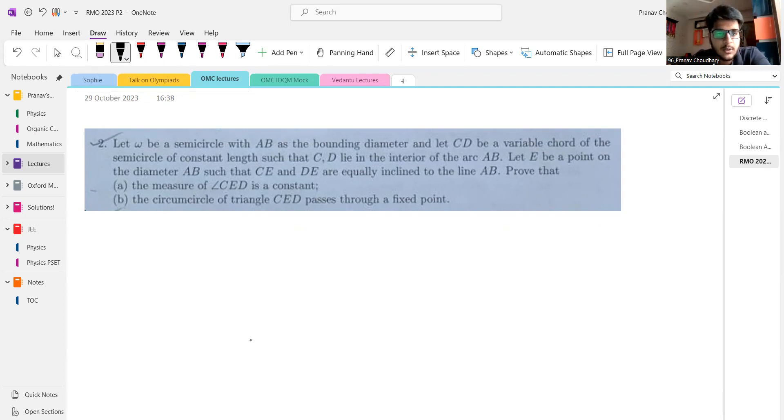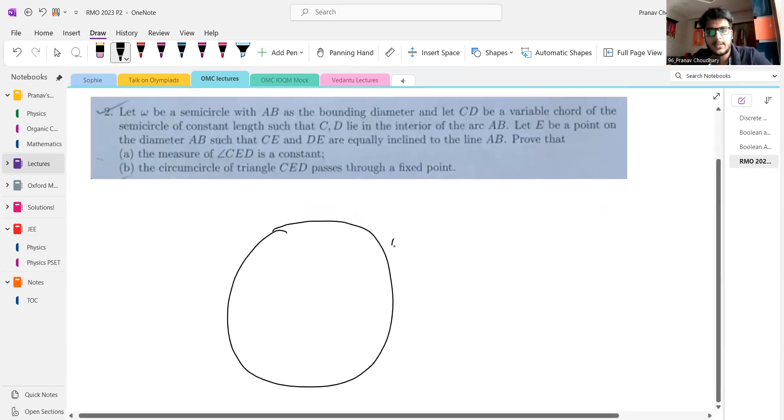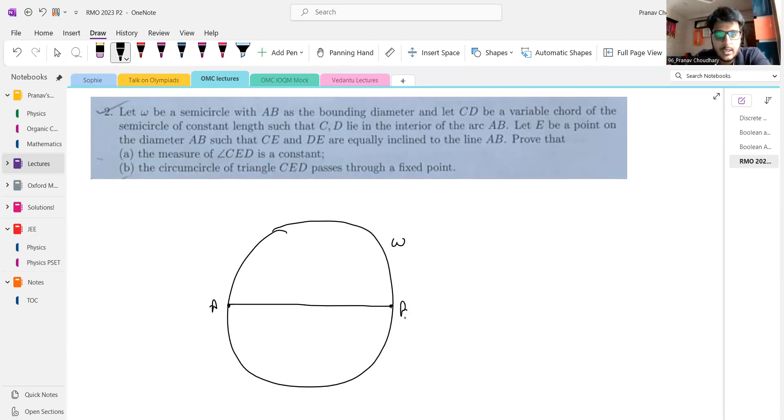First we will go over the problem. You have a circle Omega. Let us just take a circle instead of semicircle. It does not really matter at this point. The diameter is AB. CD is a chord with a fixed length which varies over the circle. Let us say the length is X.